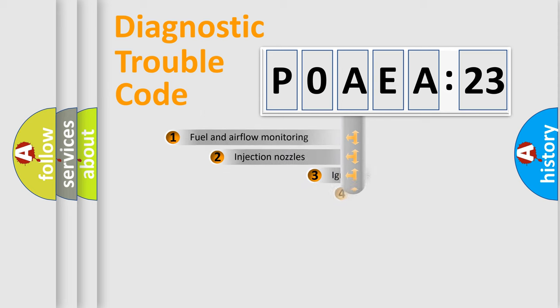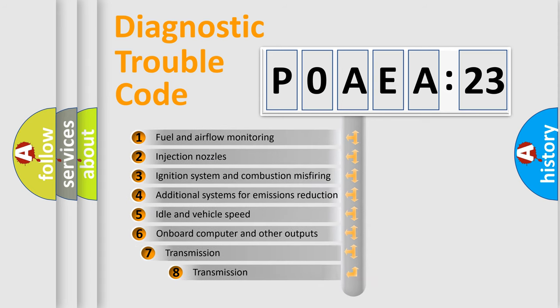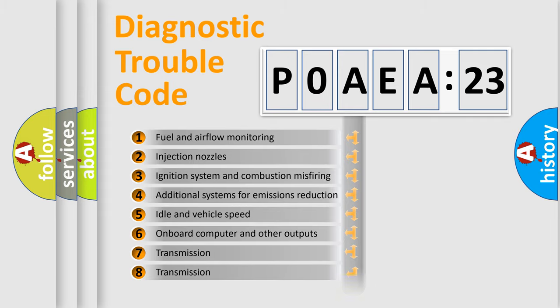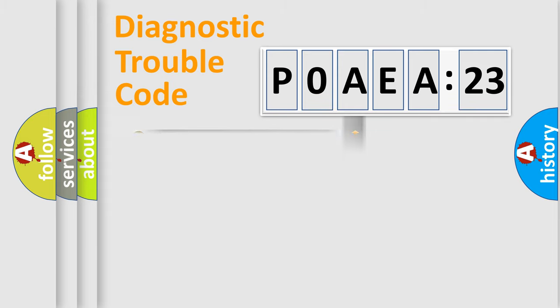The add-on to the error code serves to specify the status in more detail, for example, a short to the ground. Let's not forget that such a division is valid only if the second character code is expressed by the number zero.